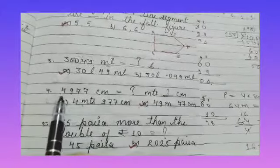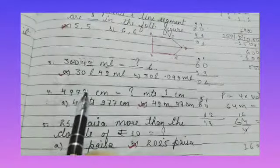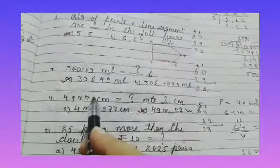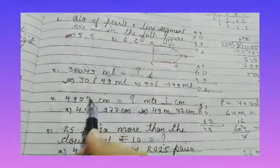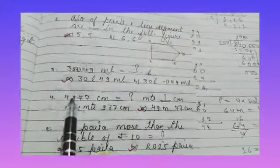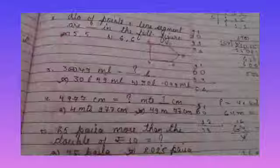4977 centimetre is equal to how many metres? So 1 metre is equal to 100 centimetres. So 1, 2. So it will be 49 metres and 77 centimetres.